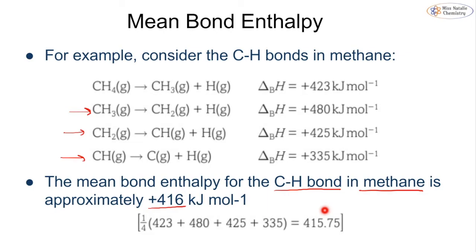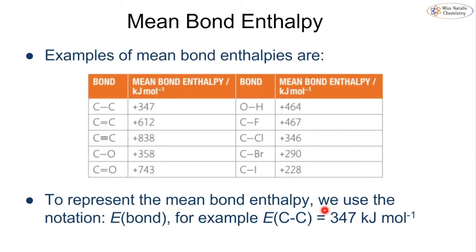When using bond enthalpies or mean bond enthalpies in calculations, you will always be given the data you need — typically in a table showing each bond and its mean bond enthalpy averaged over many molecules in different environments. You are not expected to calculate these values yourself. The notation used is E(bond), as shown at the bottom of the table.